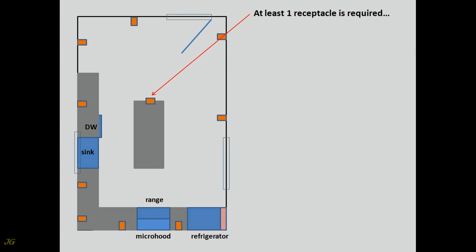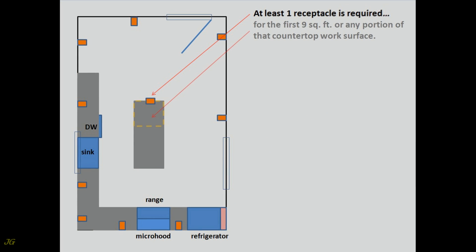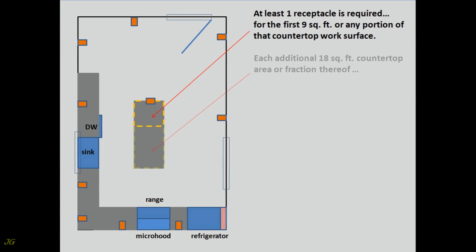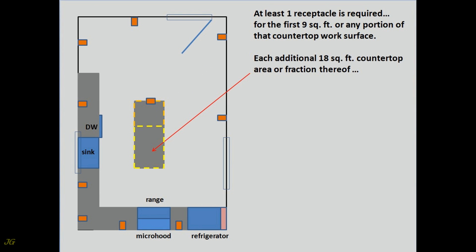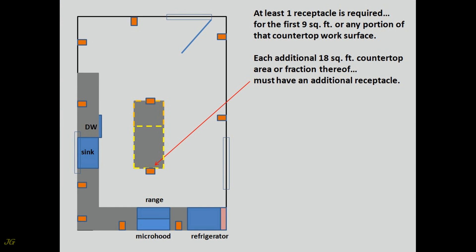At least one receptacle is required for the first 9 square feet or any portion of that countertop work surface. Each additional 18 square feet of countertop area, or fraction thereof, must have an additional receptacle.